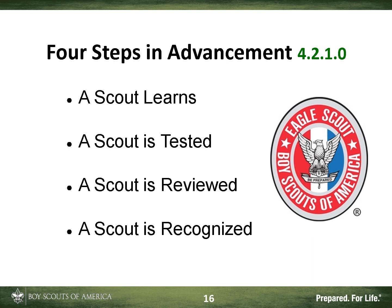There are four steps in Scouts BSA Advancement. First, the Scout learns something — how to tie a knot, something about the flag. Then the Scout is tested. This is the most important step and it is the responsibility of the Scoutmaster, who can delegate it but retains responsibility. In Scouts BSA Advancement, you don't retest. Once a Scout passes a test and is signed off — initialed in their book or recorded in Scoutbook as approved — that requirement is completed.